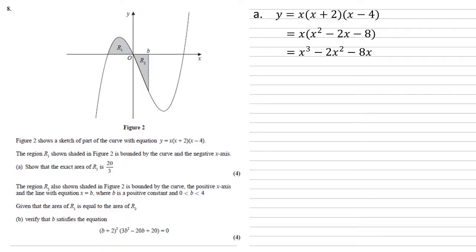Now the bounds of our integral are going to be minus 2, which we know because we've got x plus 2 in our version of the equation with the brackets, and it's going through the origin so it's our 0.